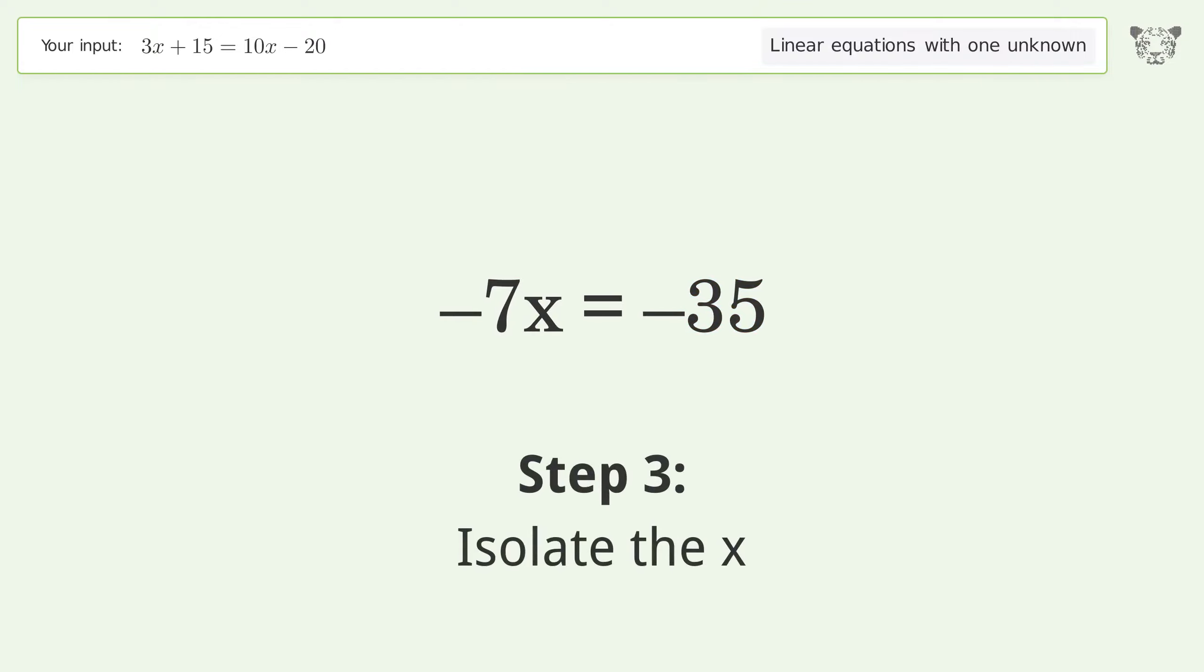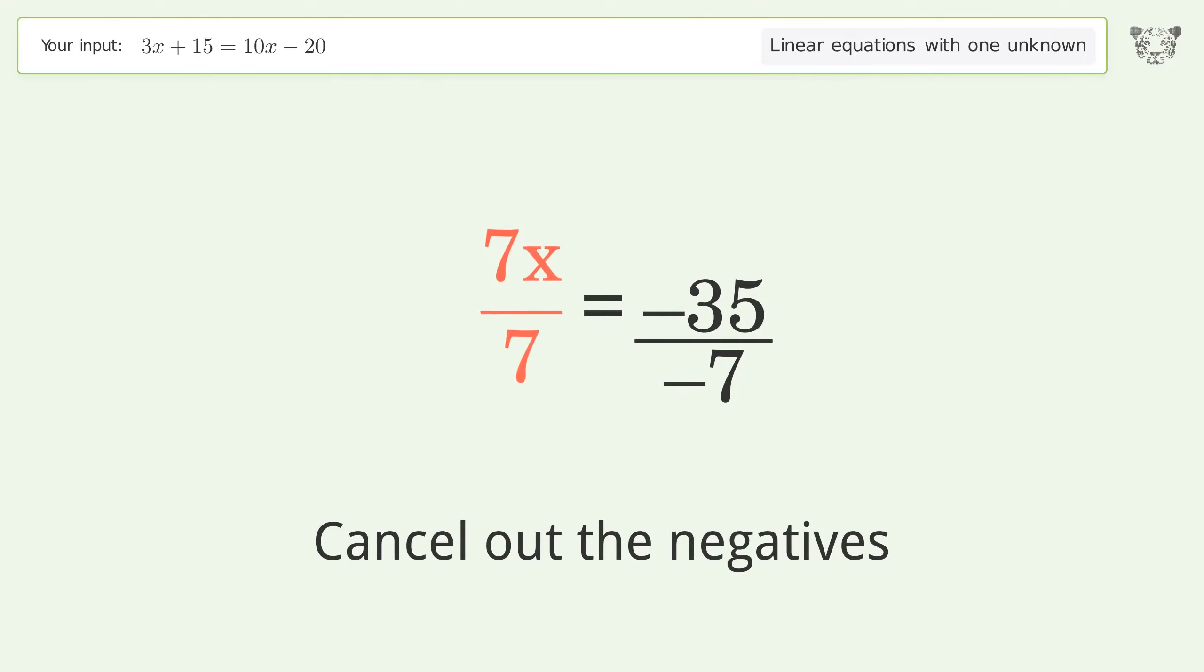Isolate the x. Divide both sides by negative 7. Cancel out the negatives. Simplify the fraction. Cancel out the negatives.